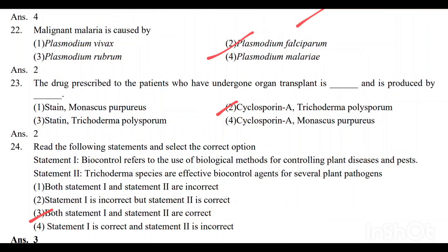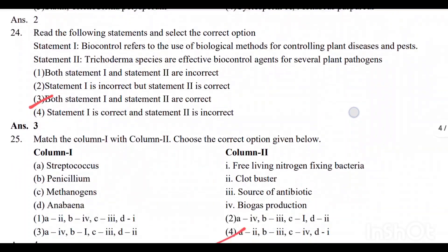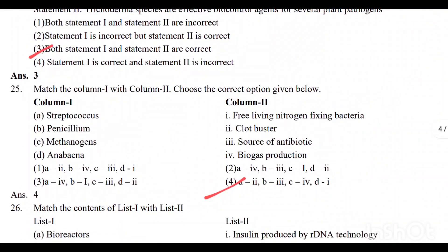Question number 22: Malignant malaria is caused by Plasmodium falciparum. Option 2 is the correct answer. Question number 23: Option 2 is the correct answer. Question number 24: Both Statement 1 and Statement 2 are correct. Option 3 is the correct answer. Question number 25: Match the following — Option 4 is the correct answer.